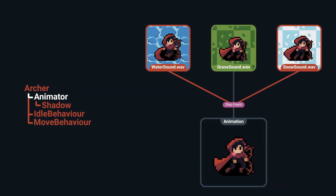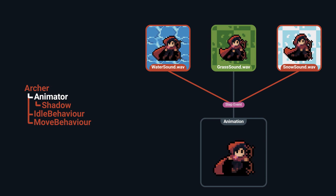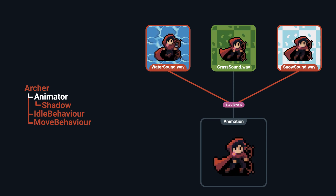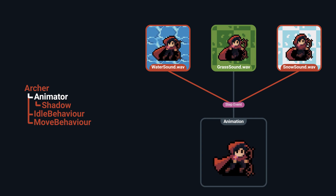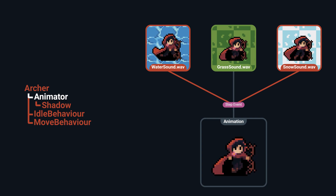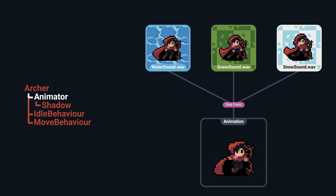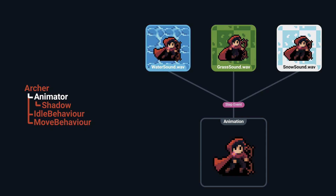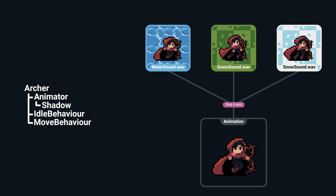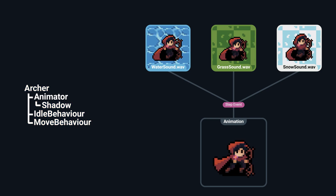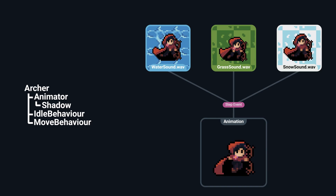Last but not least, the event system. Unity's animator event system is very limited. However, Pixardrift allows you to do all of the things I mentioned — you can have different events on the same animation depending on the circumstances in which it is played, and it allows you to pass in any method from any game object you want as an event.